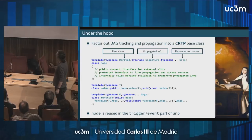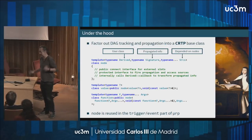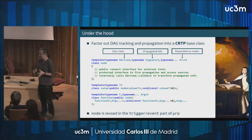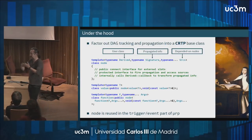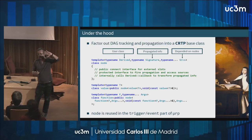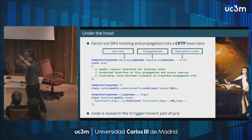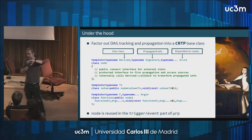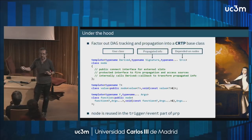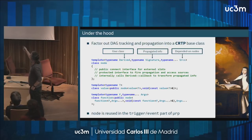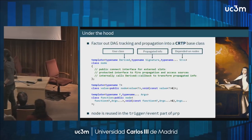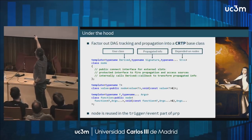I had a design insight: connectivity should not be handled by value or function itself but can be factored out into a general base class called node. This allows the same connectivity logic to be reused by value, by function, and by the event part of merp. This uses CRTP, which allows me to define value as basically a node of specific template parameters.